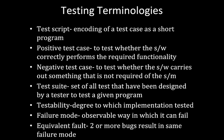'Equivalent fault' means two faults are said to be equivalent if they result in the same failure mode. For example, a division by zero causes a system crash, and accessing illegal memory also causes a system crash. Since both faults result in the same failure mode, they are considered equivalent faults.